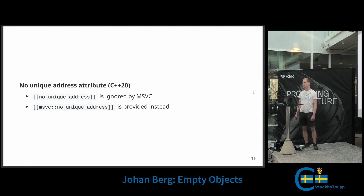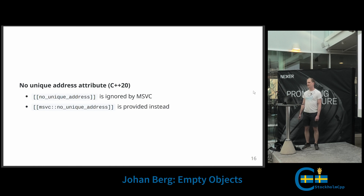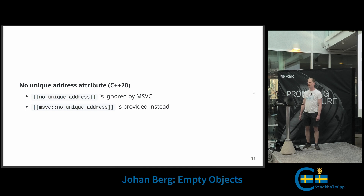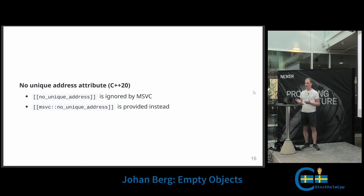A note about no_unique_address: it's a bit of a weird attribute because it has ABI-breaking impact since it changes the class layout. Unfortunately it's ignored by MSVC, even in C++20, because they didn't want to break ABI across MSVC toolset versions. If that's not a problem for you, you can use the MSVC-specific version provided, which is msvc::no_unique_address.